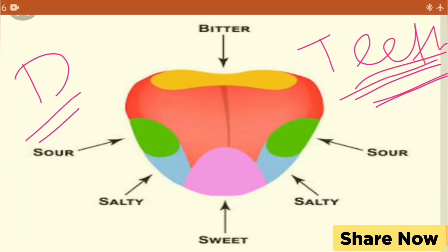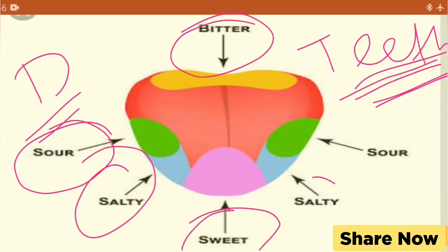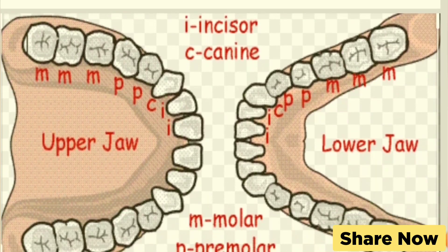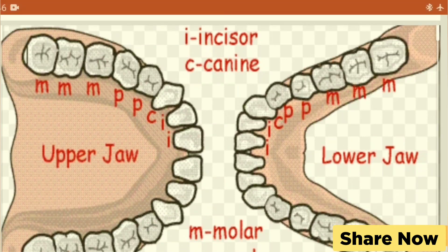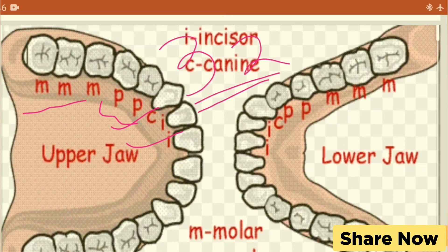In addition to the tongue's specialization, if we look at the test board we can see different types of teeth that we can recognize. We can see 4 types of teeth: incisors, canines, pre-molars, and molars. In adults we can see 32 teeth.